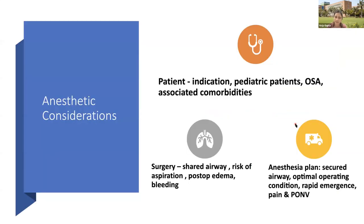Anesthetic considerations for adenotonsillectomy are related to the patient, surgery, and anesthesia plan. Patient-related risk factors include the type of indication — OSA patients stand a higher risk. Pediatric patients themselves stand higher risk due to their anatomical and physiological differences. OSA and associated comorbidities increase risk. During surgery, risk is increased by sharing of the airway, risk of aspiration, postoperative edema due to handling of airway structures, and bleeding — as a clot may dislodge leading to primary or secondary hemorrhage.